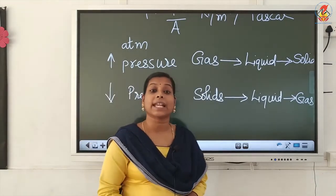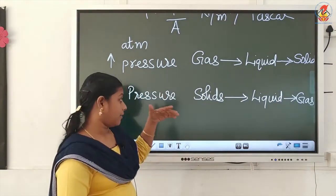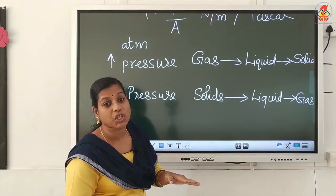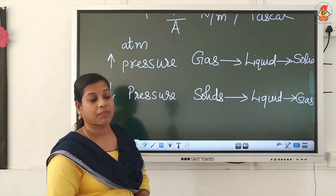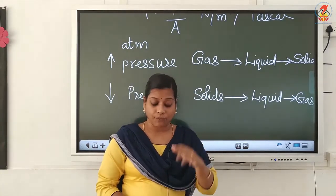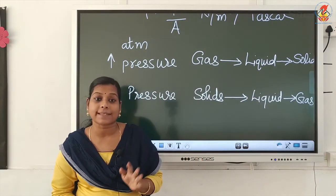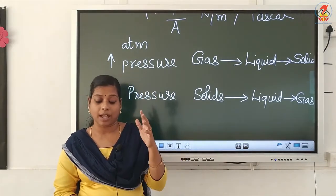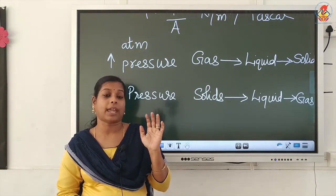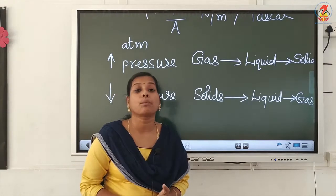Gases can be easily liquefied. We can liquefy gases by applying pressure — by increasing pressure and decreasing the temperature. By decreasing temperature and increasing pressure we can easily liquefy gases. For example, hydrogen, nitrogen, and oxygen can all be liquefied at high pressure. Ammonia can be liquefied at normal room temperature. At high pressure and low temperature, all these gases can be liquefied.